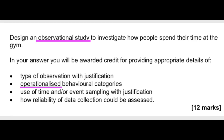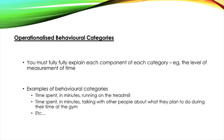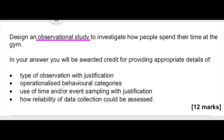Next, you're asked to create a set of operationalized behavioral categories. The keyword here is 'operationalized' — this means you must fully explain each category. For example, you may choose to measure how long someone spends running on the treadmill. To operationalize this, you would state the level of measurement used, so the behavioral category becomes 'how long in minutes someone spends running on the treadmill.' Aim for a minimum of two fully operationalized variables, though three is safer. You can answer this part in bullet points, still using full sentences.